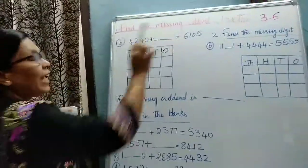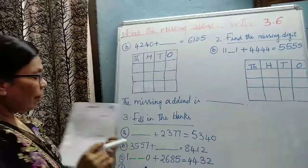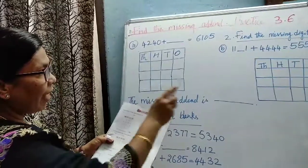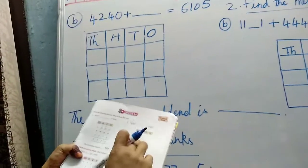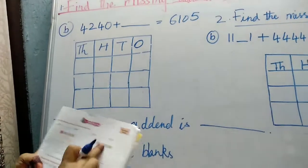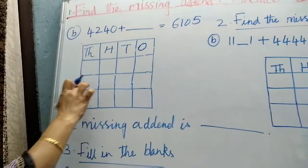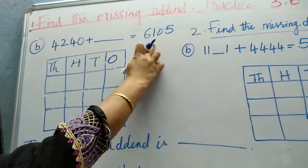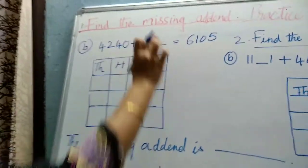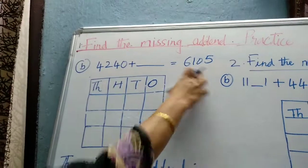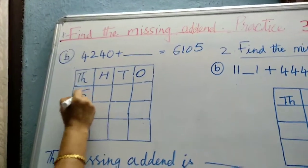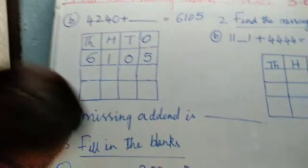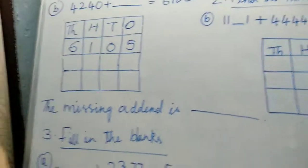First one is find the missing addend. Addend means the number which we have to add. First one they have done for us. Second one I will do. I am showing you B1. Find the missing addend. Here they have given us first addend and the answer. The second addend they did not give us. So what we should do?